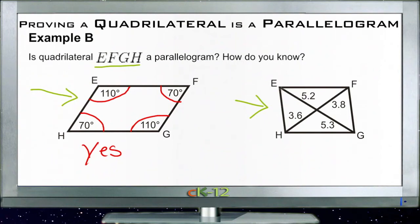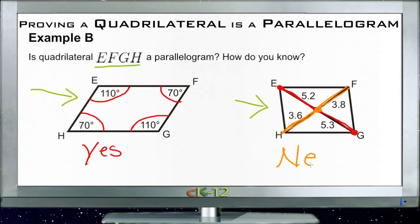For the right figure, the distance from E to the center is 5.2 and from the center to G is 5.3 — those are different. Similarly, the distances from F to the center and from the center to H are also different. Since the two diagonals do not cross at their midpoints — they do not bisect each other — this fails the definition of a parallelogram. So the left figure is a parallelogram and the right one is not.